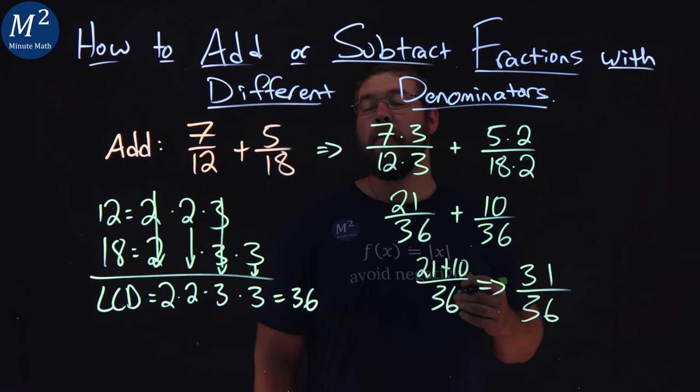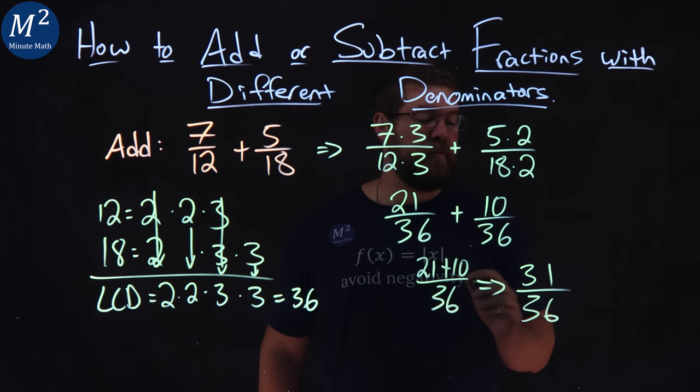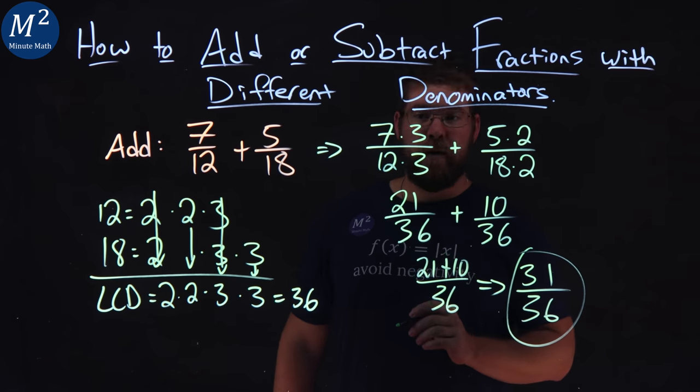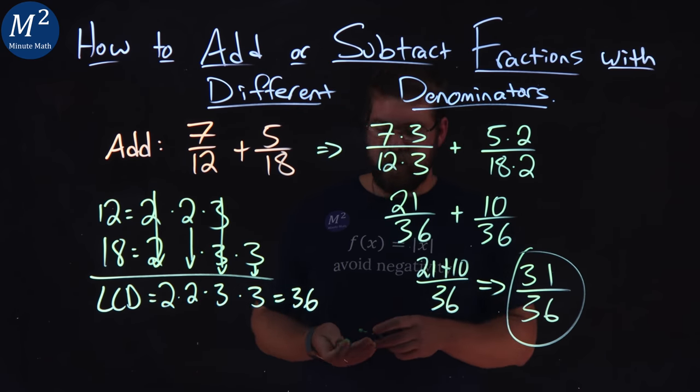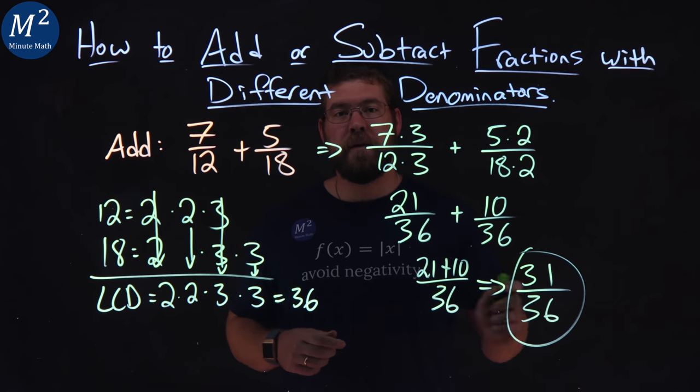Keep that there. And since 31 is a prime number, we know we can't simplify this anymore. And there we have it. 7 twelfths plus 5 eighteenths simplifies to be 31 over 36.